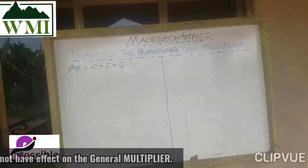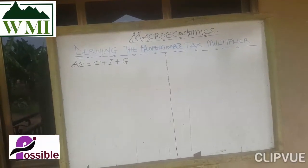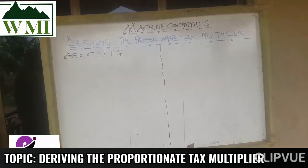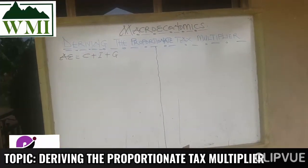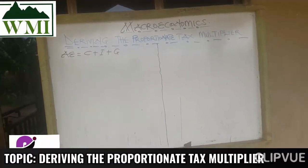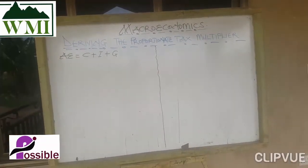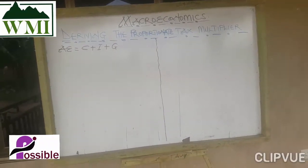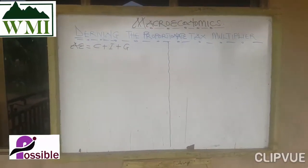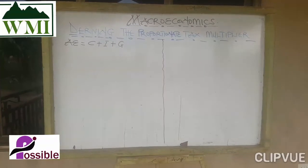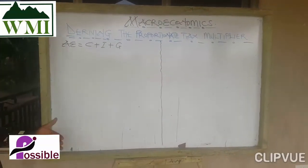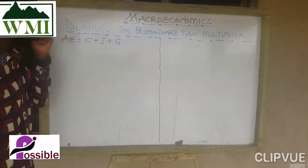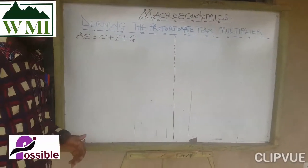Today we are going to focus on the proportionate tax multiplier. The proportionate tax multiplier is whereby the tax component has been given in percentage or decimals. So when the tax component is given in proportionate form — in percentage or decimals — then we are working under proportionate tax.